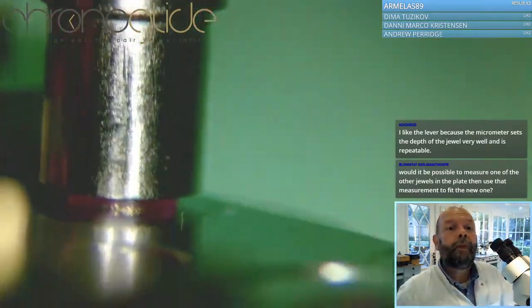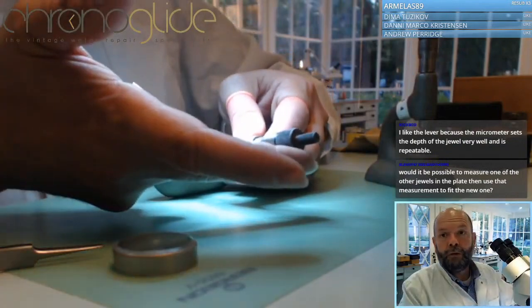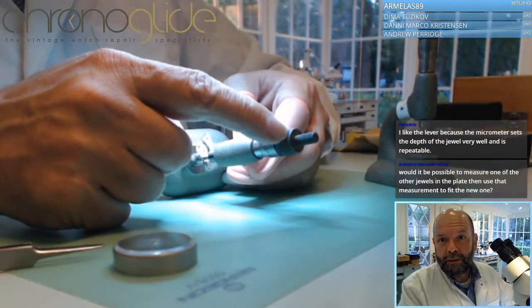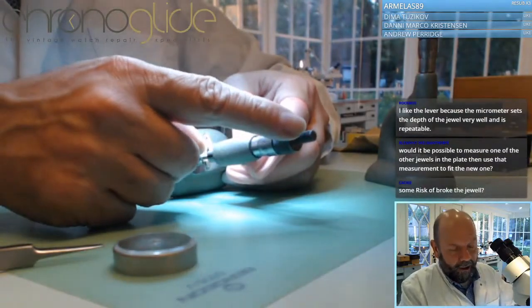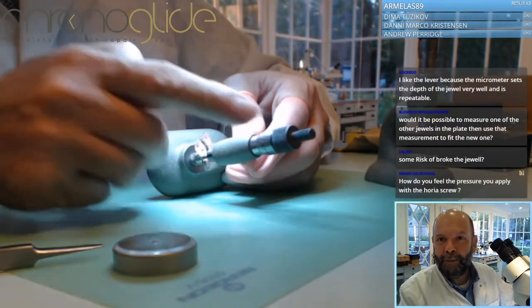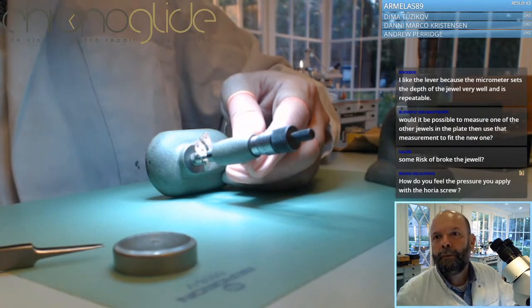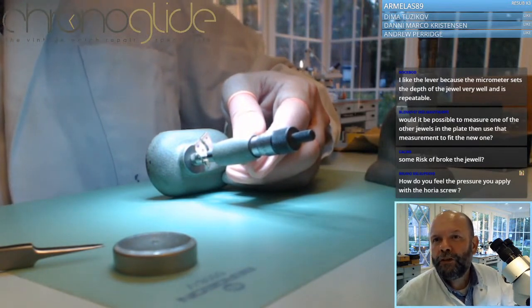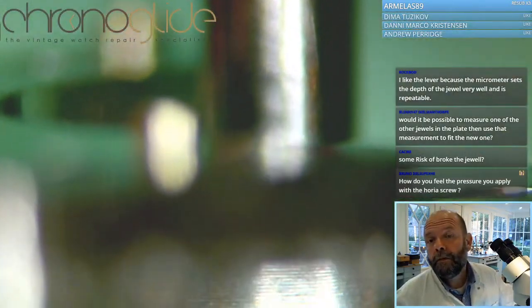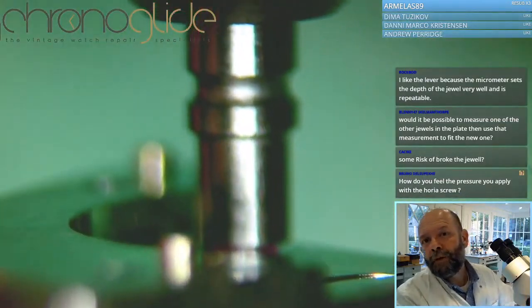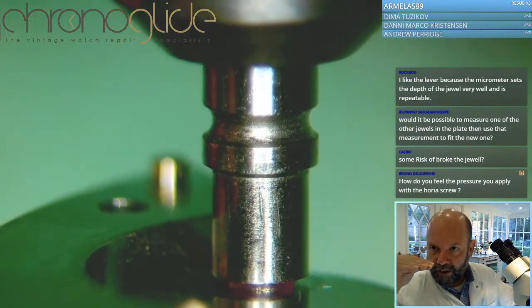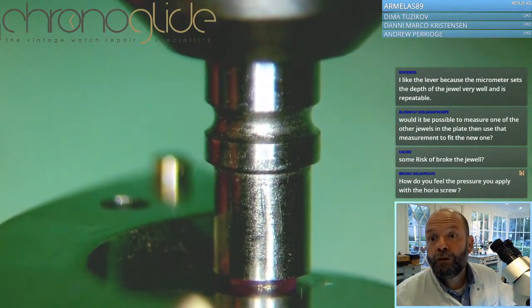There's the jewel and I'm going to twist this one. There are two diameters - if you twist the smaller one, it goes down faster, and the bigger one you've got slightly more control. Some risk to break the jewel? Yeah, there is, but it doesn't happen too often, especially if you press it gently and in a controlled way.